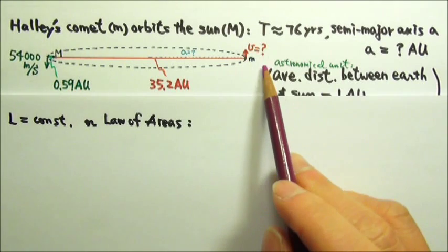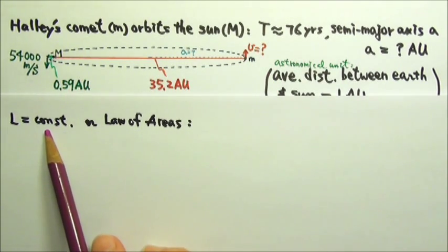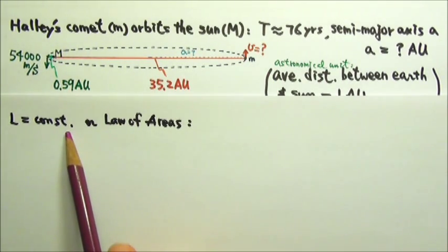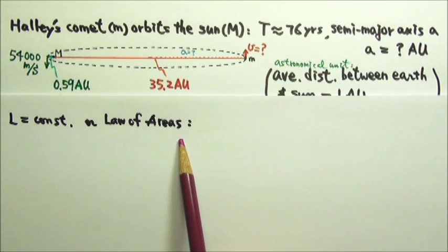To find the speed at the farthest point, we can use the conservation of angular momentum, which is also the same as the Law of Areas.